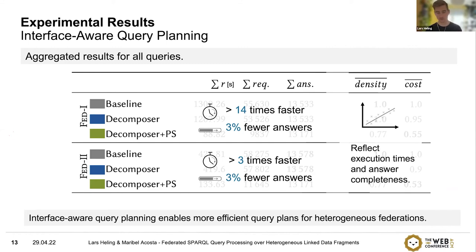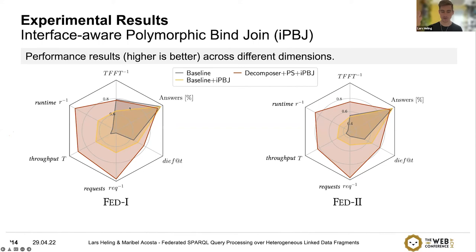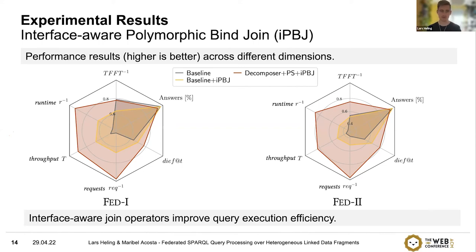We then took a closer look at the interface-aware polymorphic bind-join operator, indicated in yellow and red compared to the baseline in gray. Regarding efficiency — number of requests, throughput, and runtime — we can improve performance with this new operator. The only slight detrimental effect is observed in the time to retrieve the first solution to the query. But overall, in both federations, this interface-aware join operator improves query execution efficiency.